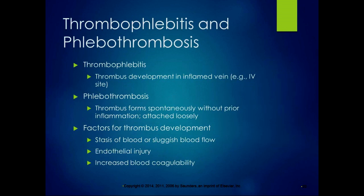Thrombophlebitis is where a thrombus develops in an inflamed vein — like an IV site can be inflamed and you get a clot that develops there. In phlebothrombosis, the thrombus forms spontaneously without prior inflammation and is attached loosely. They sound a lot the same, but there is a little bit of difference.